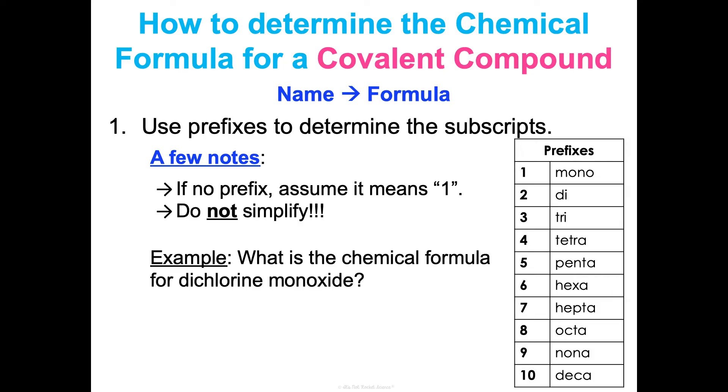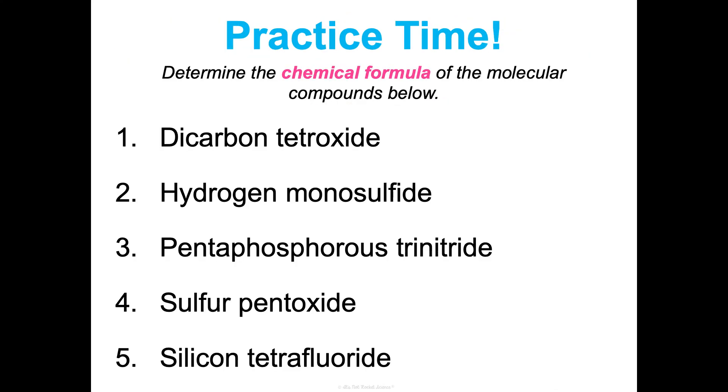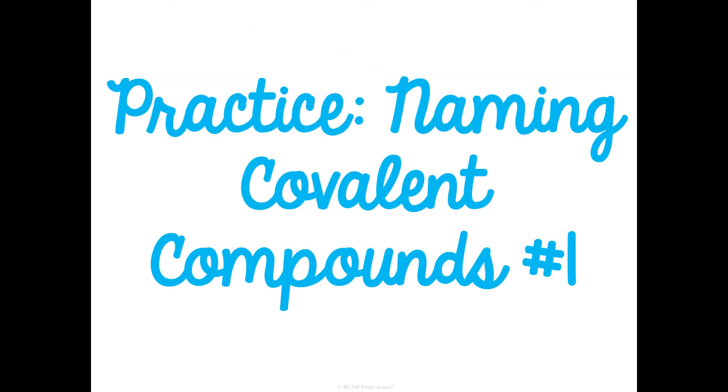So what would be the chemical formula for dichlorine monoxide? Well, di means 2, and chlorine means Cl, so Cl2. And then mono means 1. Oxide refers to oxygen. So Cl2O. That's it. I want you to practice some of those, and then we'll go over those in class. We'll do the second part of this practice handout as well.